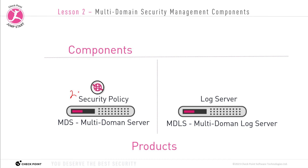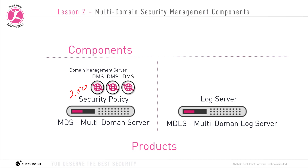We can create up to 250 domains on one MDS server. We call the domains on the MDS server a DMS — a domain management server. Each DMS acts exactly like a security management server for a specific customer, for a specific domain. Each DMS manages the security policy, the security database, and the security rules for a customer or domain. So if we have three customers and three domains, we need to have three domain management servers — one DMS for each customer.